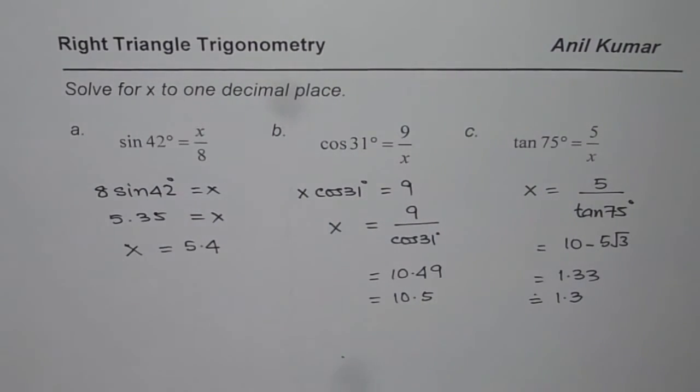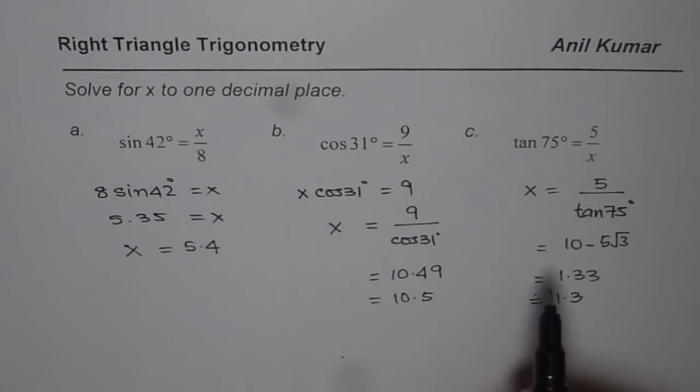That is how you can actually find the value of unknown from these equations, which are kind of ratios with trigonometric primary ratios. Go through this video, understand these very basic steps to start with. And these steps will help you to solve any right triangle. I hope that helps. Thank you and all the best.